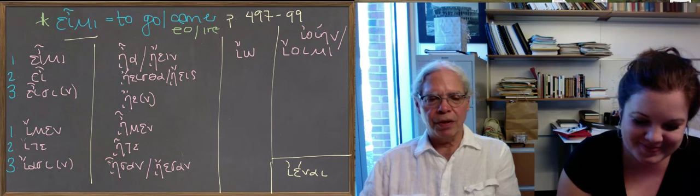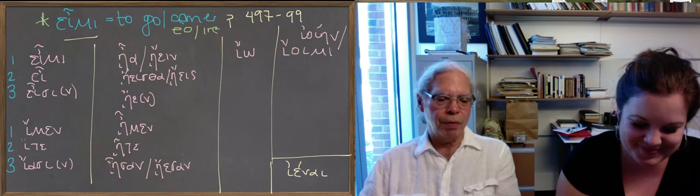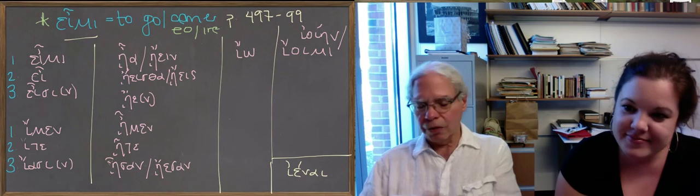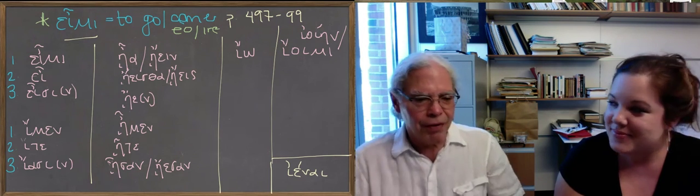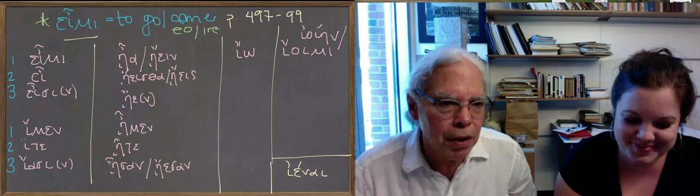So if you learn these forms reasonably well, you won't confuse any one of them. They're very different, well, not very different, but they're different from the forms of the verb to be.